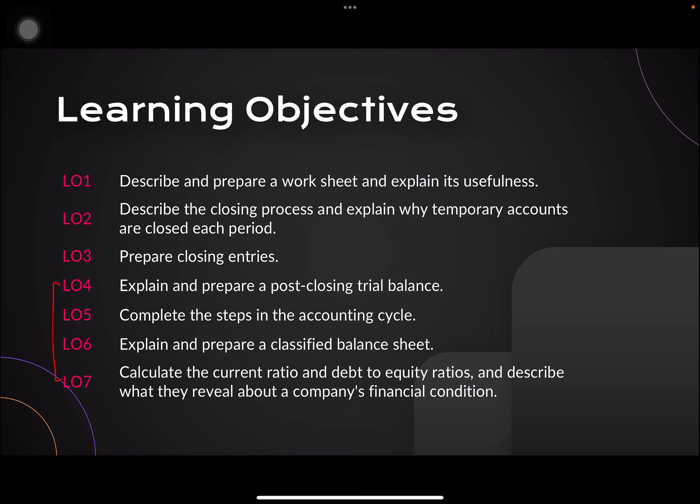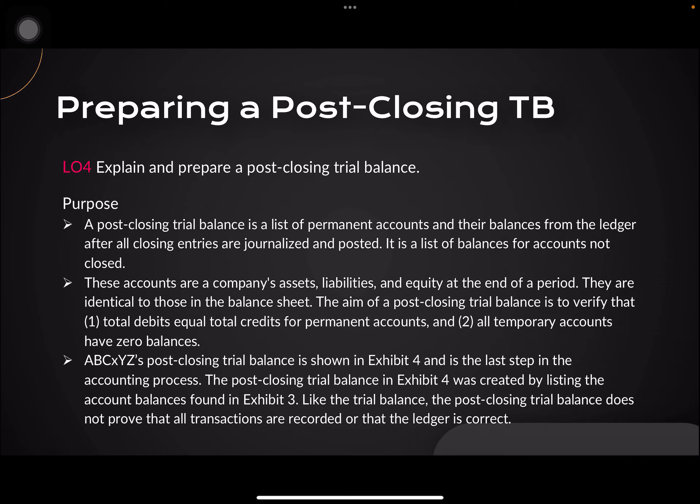For this specific session, we will be discussing learning objectives number 4 up until number 7. As we have already described what our worksheet is and we already determined how to prepare closing entries, learning objectives 4, 5, 6, and 7 will all be about the post-closing trial balance, the necessary steps to complete the accounting cycle, how to prepare a classified balance sheet, and how to calculate the current ratio and other financial ratios.